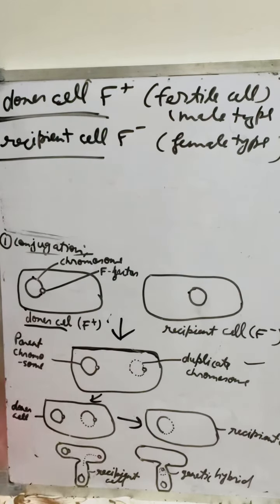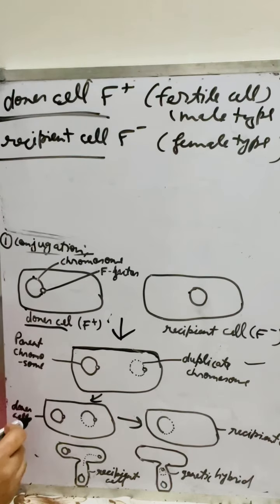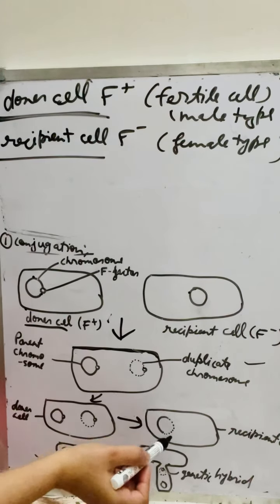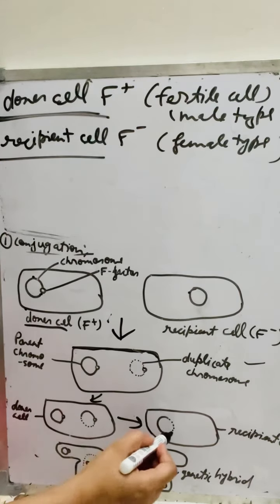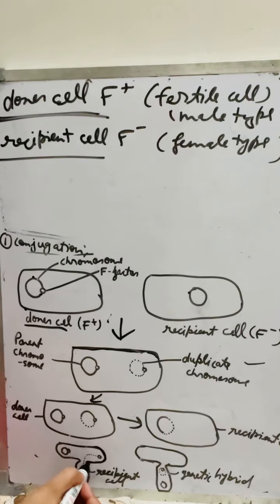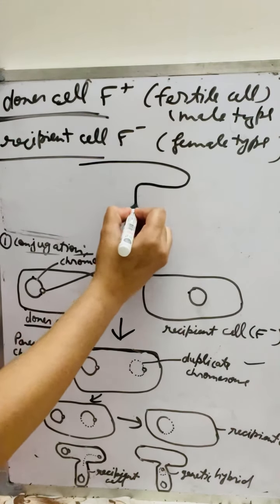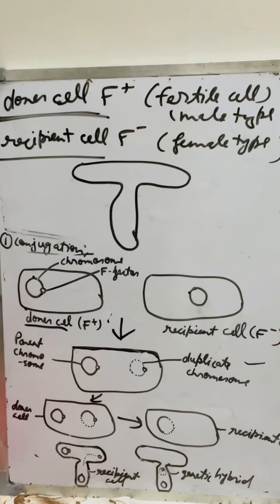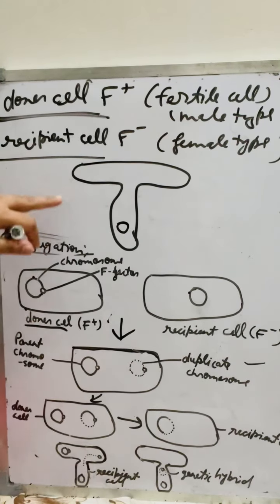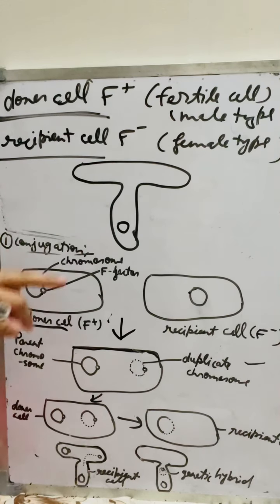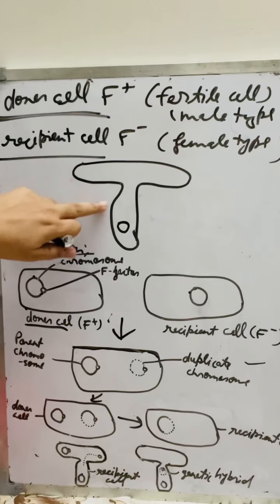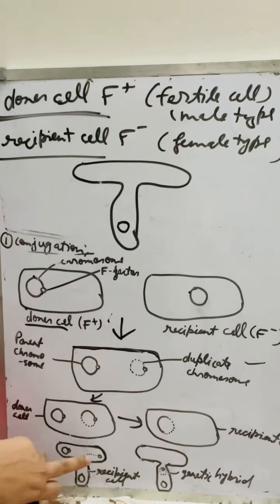In the third step, the donor cell F-factor fuses with the recipient cell. After fusion, they form a conjugated tube-like structure. The F-factor enters through the conjugated tube into the recipient cell, meaning the donor cell chromosome enters into the recipient cell. This process is called conjugation.